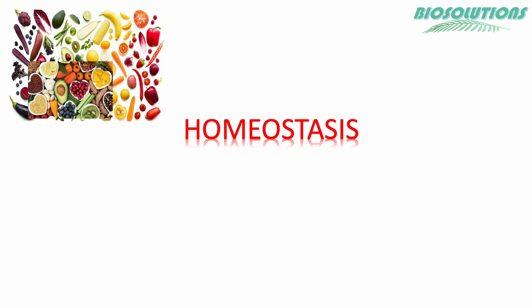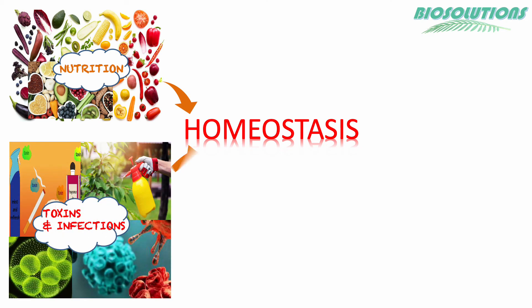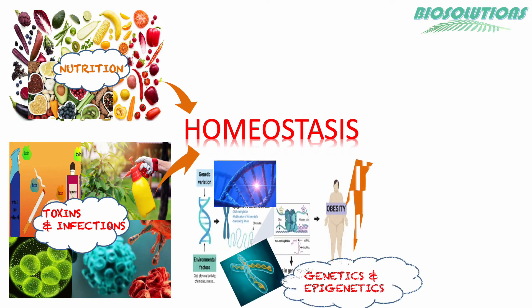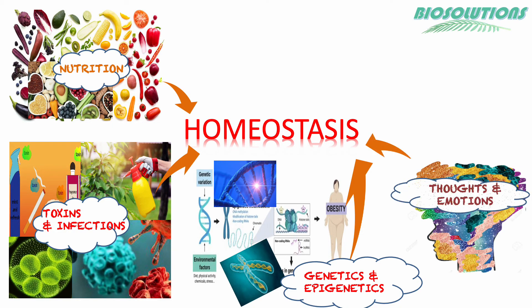Our lifestyle choices, environmental exposures, and diseases affect homeostasis. A diet lacking a specific vitamin or mineral can affect homeostasis — like iron deficiency will cause anemia. Bacterial toxins, pesticides, insecticides, drug overdose, and certain genetic changes in our cells interfere with homeostasis, causing diseases.